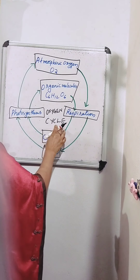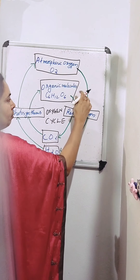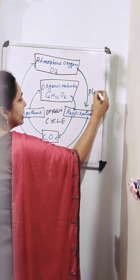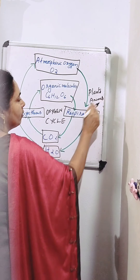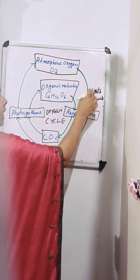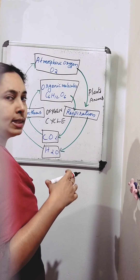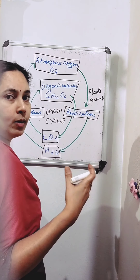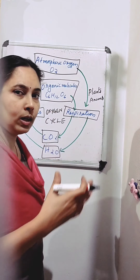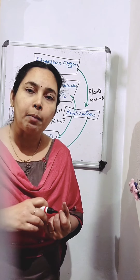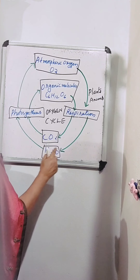Now we can look at the picture of the oxygen cycle. Atmospheric oxygen is taken in by plants and animals through the process of respiration. Plants and animals take in oxygen, and respiration means the breaking down of food to release energy, carbon dioxide and water. So they use oxygen for the process of respiration, and during respiration, along with energy, carbon dioxide and water are given out.